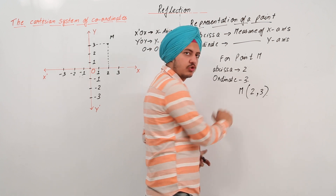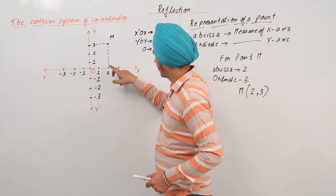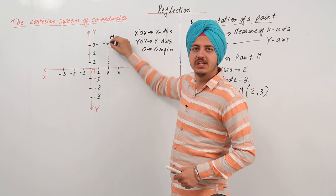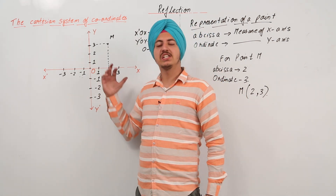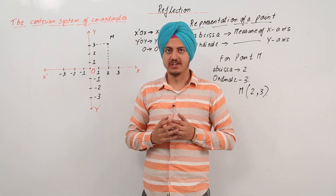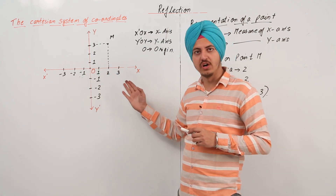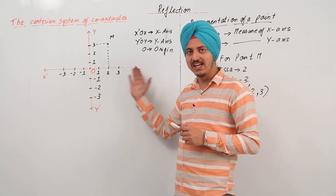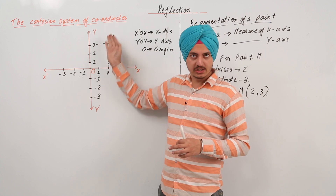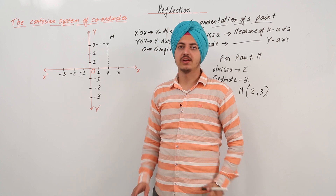If M is at (2, 3), we go 2 points along the x-axis and 3 points up, draw straight perpendicular lines, and wherever they meet is point M. The basic sign rule is: to the right of the origin the abscissa is positive, to the left it is negative; upwards the ordinate is positive, and downwards it is negative.